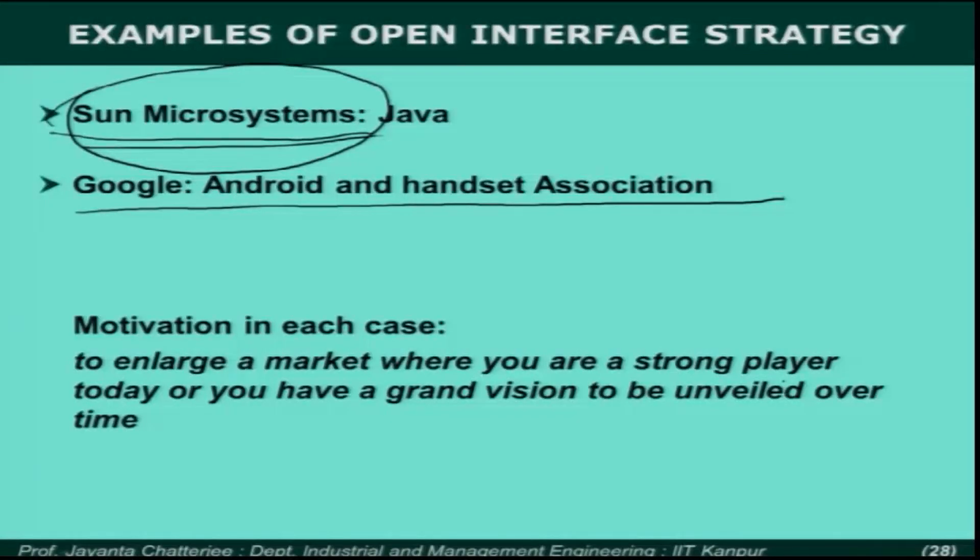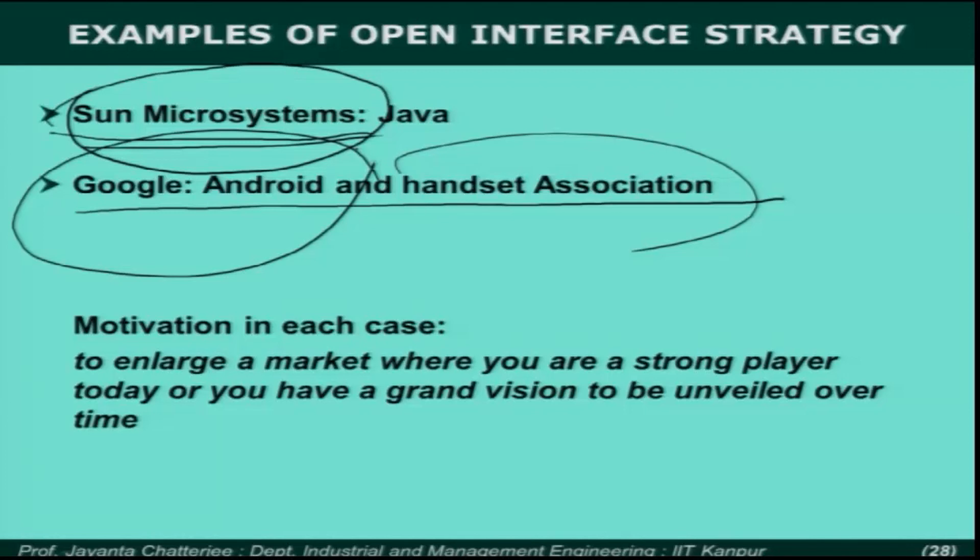Sometimes companies use this for some kind of a grand vision that is not easily understandable right in the beginning. But as it keeps expanding, you can see the high dominance created by Google Android and the handset association collaboration. You can now see how they are approaching requirements that were earlier fulfilled by laptops, snatching that market away — laptop sales are declining while smartphones and tablet phones are rising. By creating this open interface platform, you can sometimes create long-range, highly powerful strategies for products. That is where we end today, and we will further expand on this in the next session.